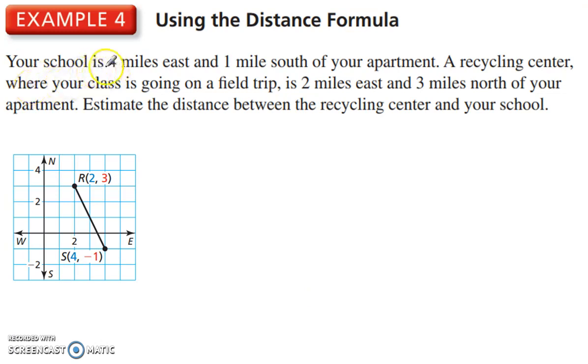We've got an example here. The school is 4 miles east and 1 mile south of your apartment. We can put this on a coordinate system. 4 miles east and 1 mile south. We go down for south of the apartment, and the recycling center is 2 miles east and 3 miles north. Estimate the distance between the recycling center and your school. So, the distance formula is x1 minus x2, so 4 minus 2. Again, the order doesn't matter, 2 minus 4, 4 minus 2, because we're squaring it. Plus, negative 1 minus 3, or we could do it the other way around, 3 plus 1. Doesn't matter. Negative 1 minus 3 squared.